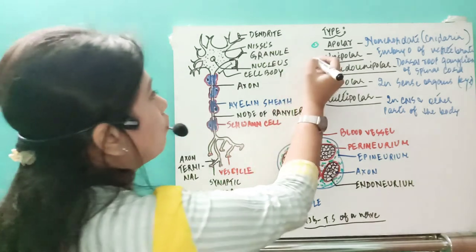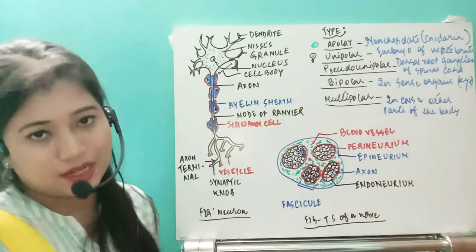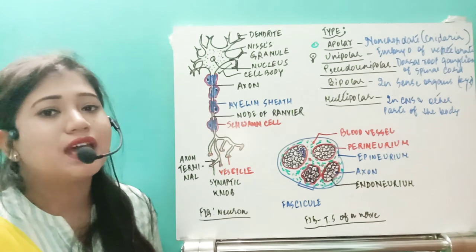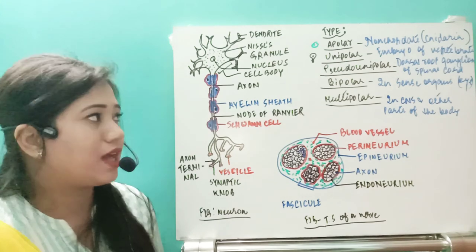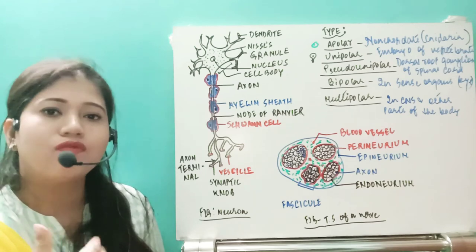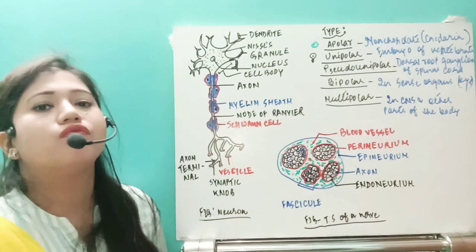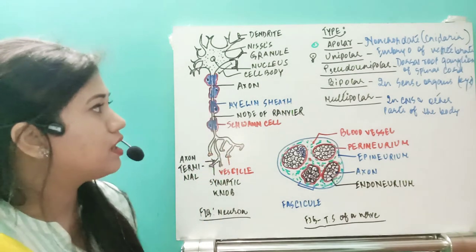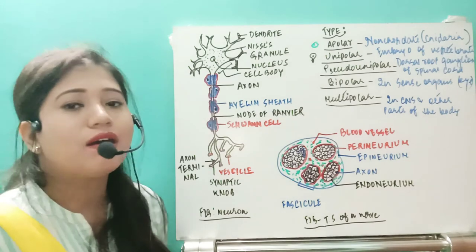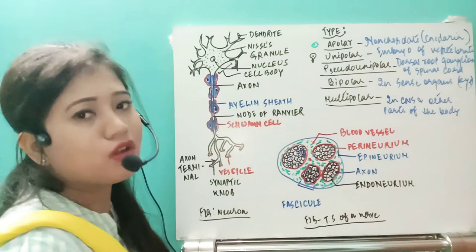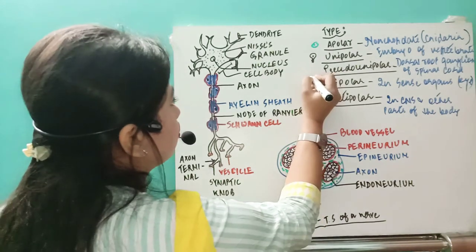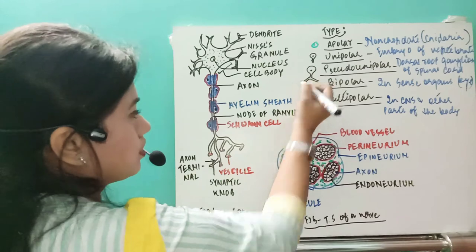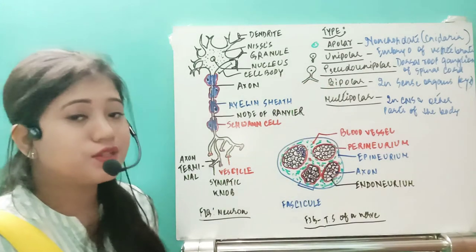The second type is the unipolar neuron, which has only one projection coming out of the cytone. This type is also present in the human body — in the embryonic state of vertebrates including humans we have unipolar neurons. But as embryonic development proceeds, unipolar neurons gradually modify into multipolar neurons. Next is the pseudo-unipolar neuron — 'pseudo' means false. It appears to have one projection but soon after coming out of the cytone it bifurcates, making it actually bipolar.